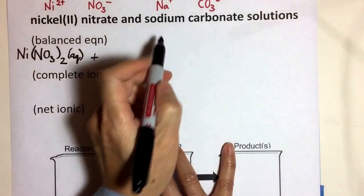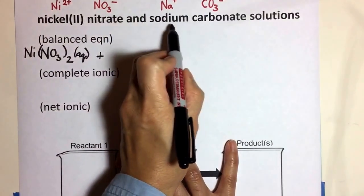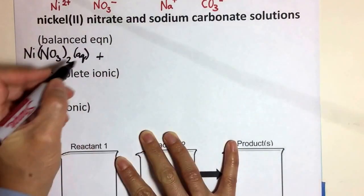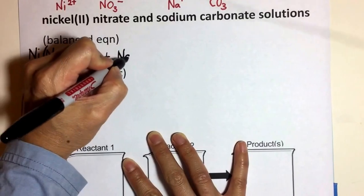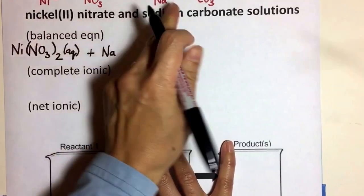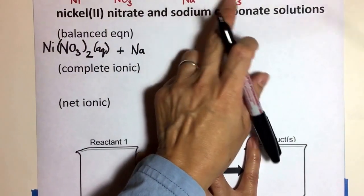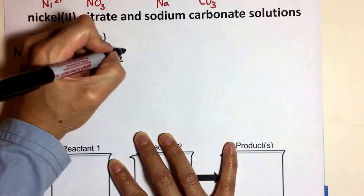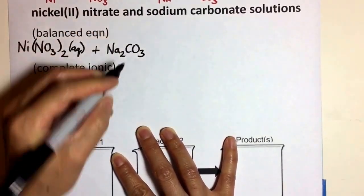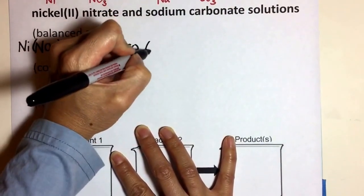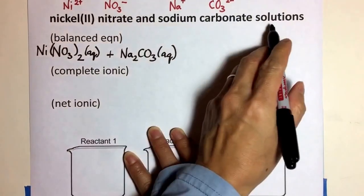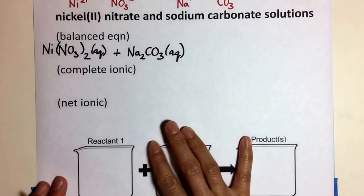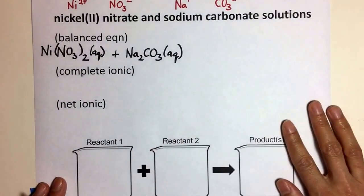The second reactant is sodium carbonate. Sodium carbonate, when it's balanced, needs two sodiums to every carbonate ion. So two sodiums to every carbonate ion. And once again, it is a solution.